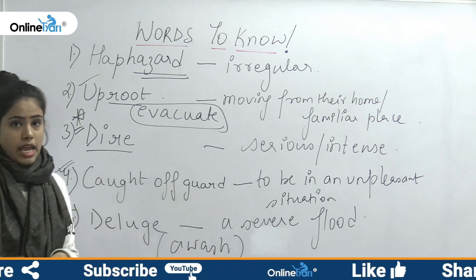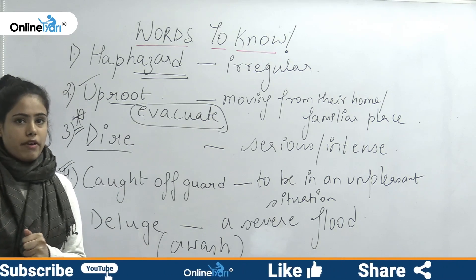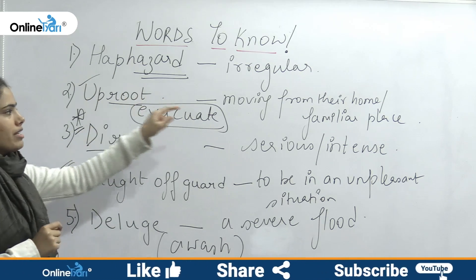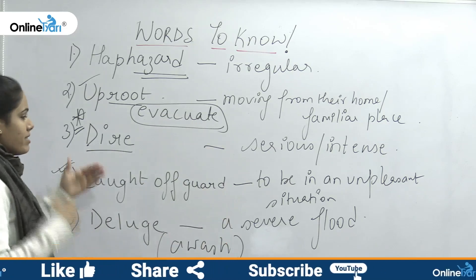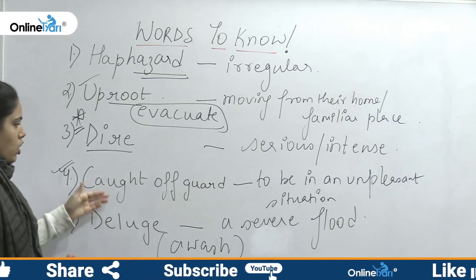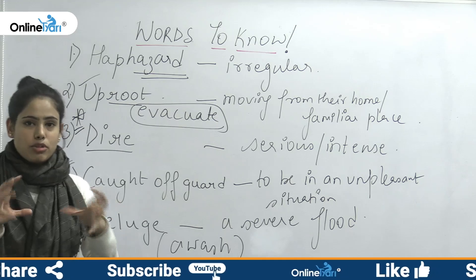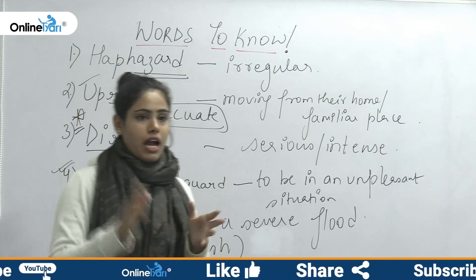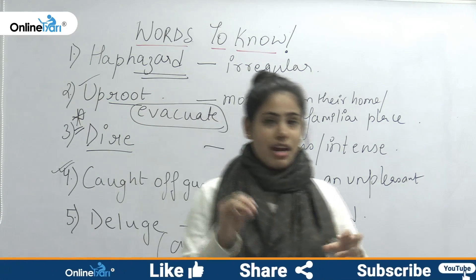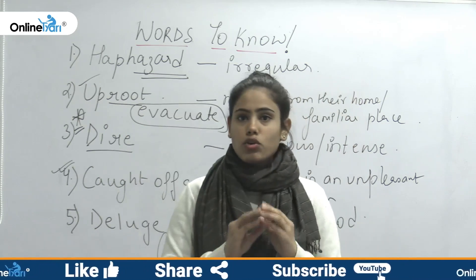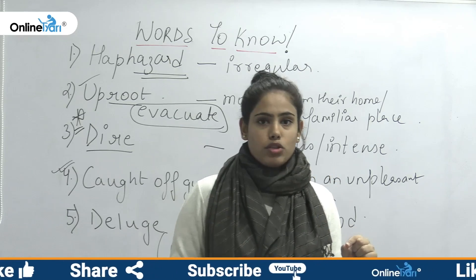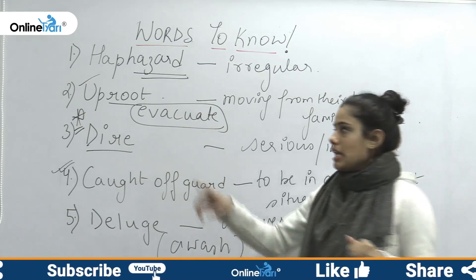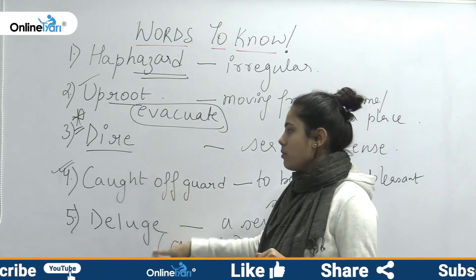Words to know today — let's quickly revise the five words once more for you. Haphazard, which means irregular. Uproot — apne jagah ko chhodke kisi doosre jagah jana, safe jagah. Dire means serious. Caught off guard means kisi buri sthiti mein phansna, irregular situation mein. Deluged ka matlab a severe flood.